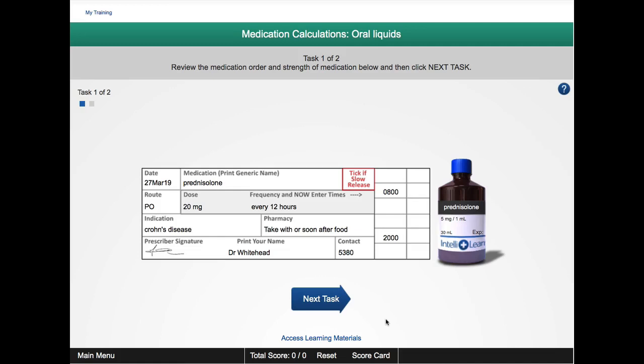Using the 5ml syringe is easy but it does require you to be vigilant of a couple of things. In this case we've got an order of prednisolone of 20 milligrams, and the strength of the medication is 5 milligrams in 1 mil.